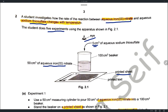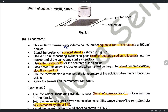For the first experiment, use a measuring cylinder to measure 50 cm³ of iron(III) nitrate in a beaker placed on a printed text. Use another measuring cylinder for 5 cm³ of aqueous sodium thiosulfate, and start the stop clock at the same time. Use a thermometer to measure the temperature of the beaker and look from above to record the time when the printed sheet becomes visible, then record the final temperature.